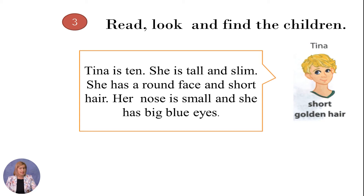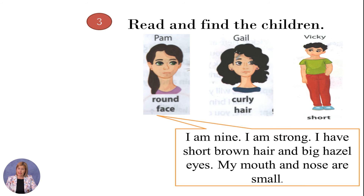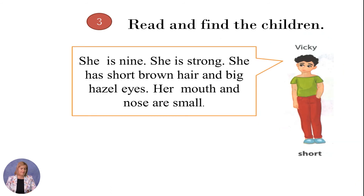Let's go for the next one. 'I am 9. I am strong. I have short brown hair and big hazel eyes. My mouth and nose are small.' Make a pause and think. Let's check — of course, it's Vicky. Vicky is 9, she is strong, she has short brown hair and big hazel eyes, and her mouth and nose are small.